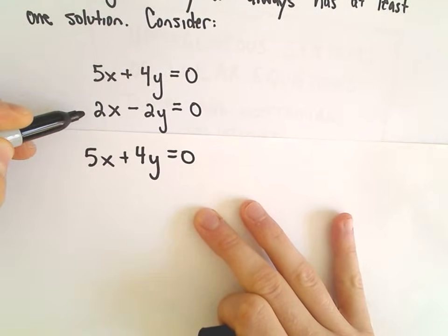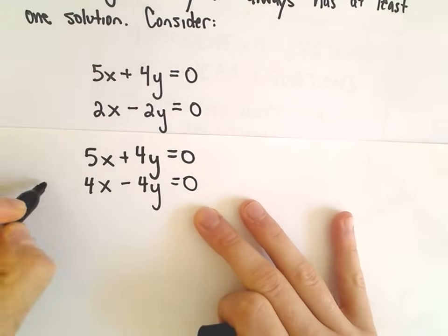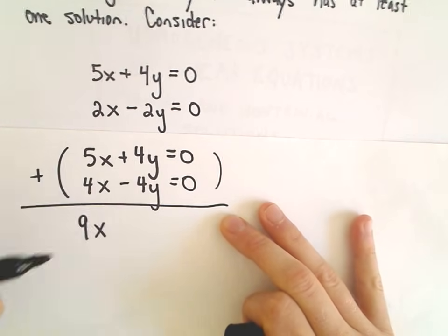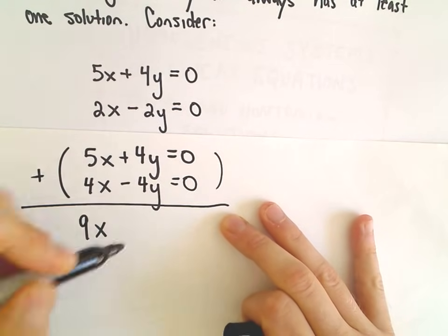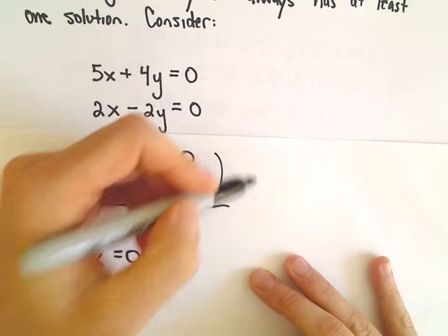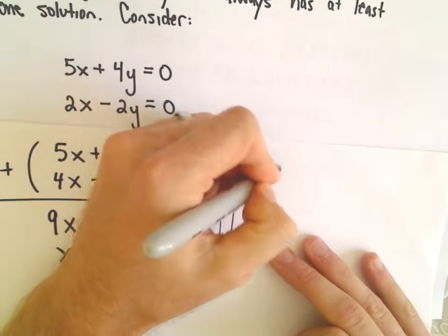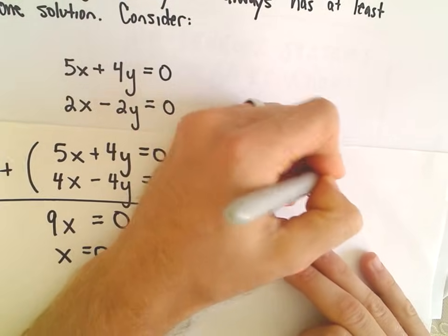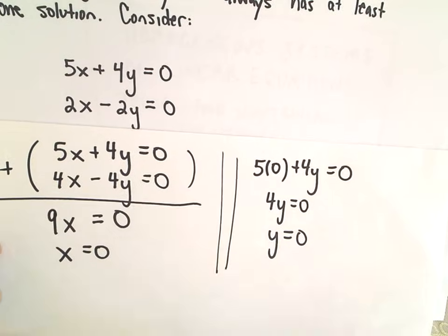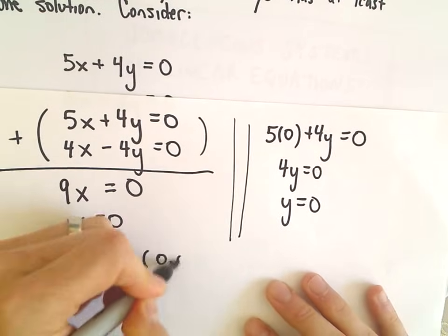If we multiply the second equation by 2, we'll get 4x minus 4y equals 0. Adding those equations together — elimination by addition — the negative 4y and positive 4y cancel, so we get 9x equals 0, which tells us x has to equal 0. Plugging x equals 0 into the first equation gives 5 times 0 plus 4y equals 0, so 4y equals 0, and y has to equal 0. The only solution is the point (0, 0).